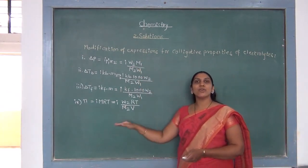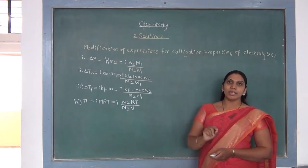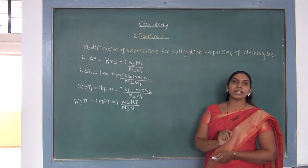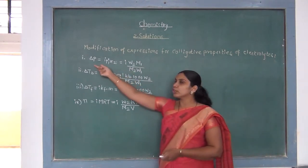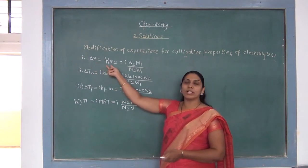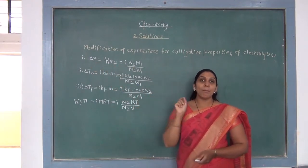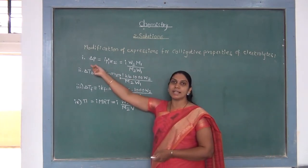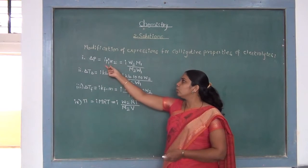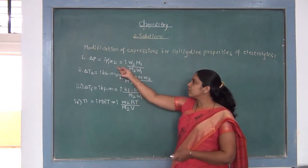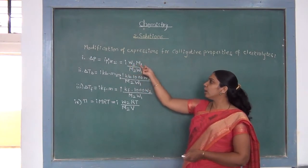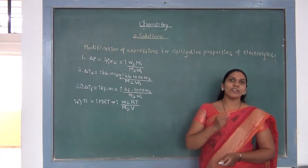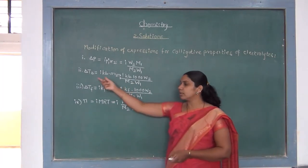There are four modified expressions for the colligative properties of electrolytes using the Van't Hoff factor. The first is vapor pressure lowering: we know delta P equals P0 times x2, but for electrolytes it is modified as delta P equals I times P0 times x2, which equals I times W2 M1 divided by M2 times W1.